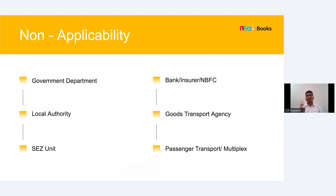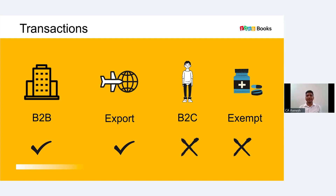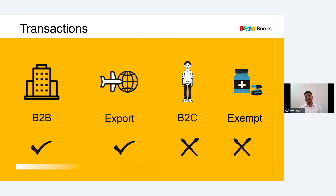For businesses over 20 crore, e-invoice must be issued only for B2B supplies and export supplies — whether with or without payment of duty, including supply to SEZ. For B2C supplies, e-invoice is not applicable. If you go to a shopping mall whose turnover exceeds 20 crore, they don't need to issue e-invoice for your biscuit or soap purchase. Similarly, for exempt supplies of goods or services, e-invoice is not required even if turnover exceeds 20 crore.